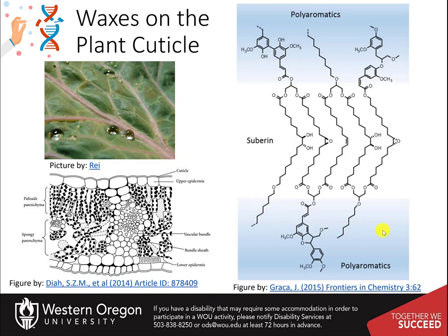Suberin, shown here, is created by fatty acid lipids being attached to glycerol backbones in a randomized and disordered net of lipids, forming what is called the dark lamellae. The outer wall is called the cuticle and is composed of cutin, a waxy substance similar to suberin, cross-linked with plant cell wall carbohydrates to form a protective waterproof layer.